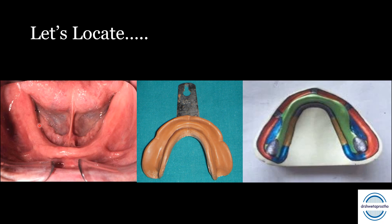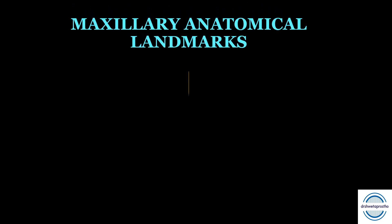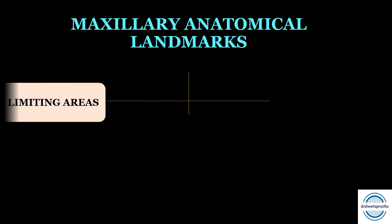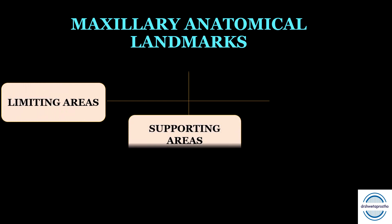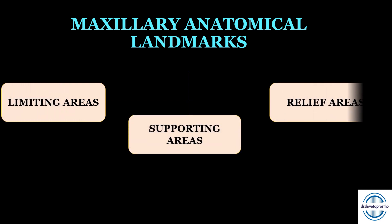This is the buccal shelf area on both sides. Three things you should know about any landmark: first is its location, second is its anatomy and muscle attachment, and third is its function. We will understand the mandibular anatomical landmarks under three headings: limiting areas, supporting areas, and relief areas.